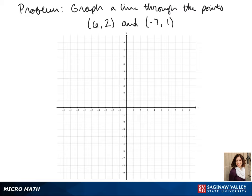First we go forward 6 on the x-axis and up 2, and that's our first point. Next we go back 7 and up 1, and that's our second point.